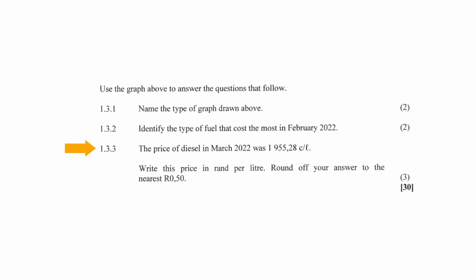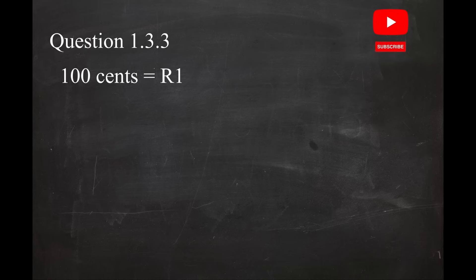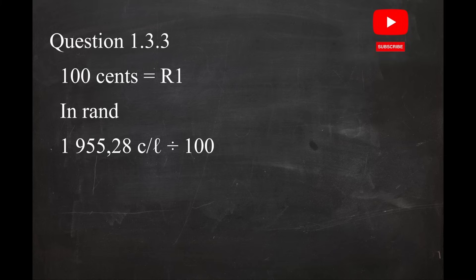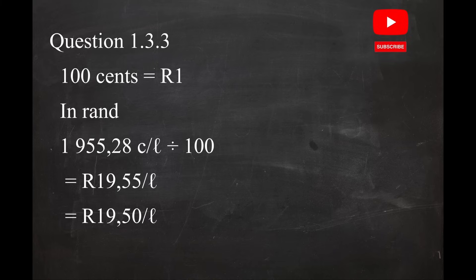In question 1.3.3, it is stated that the price of diesel in March 2022 was 1,955.28 cents per litre. You have to write this price in Rand per litre rounded to the nearest 50 cents. There are 100 cents in one Rand, so 1,955.28 cents per litre equals 1,955.28 divided by 100, which equals a price of R19.55 per litre. Rounding this value to the nearest 50 cents gives you a price of R19.50 per litre.